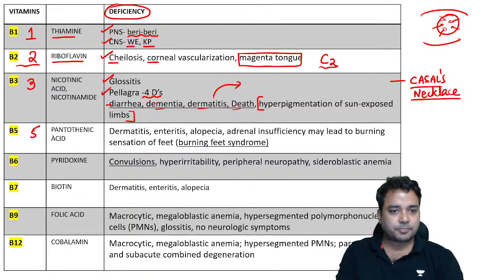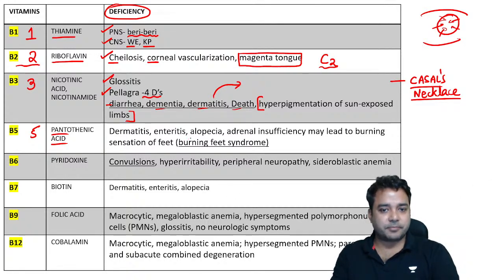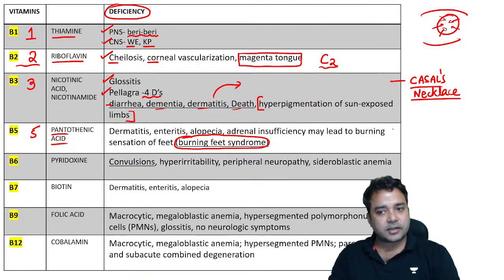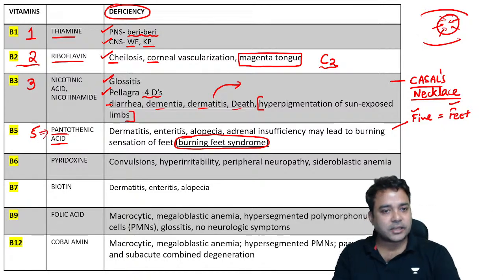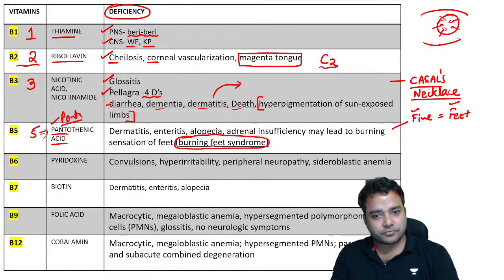B5 (pantothenic acid) — burning feet syndrome is associated with B5. Simple way to remember: 5 starts with F, burning feet has F, burning feet goes with B5. Penta means 5 — B for penta, penta is 5, and feet has F. B6 (pyridoxine) — deficiency is associated with isoniazid intake, commonly seen in tuberculosis treatment.